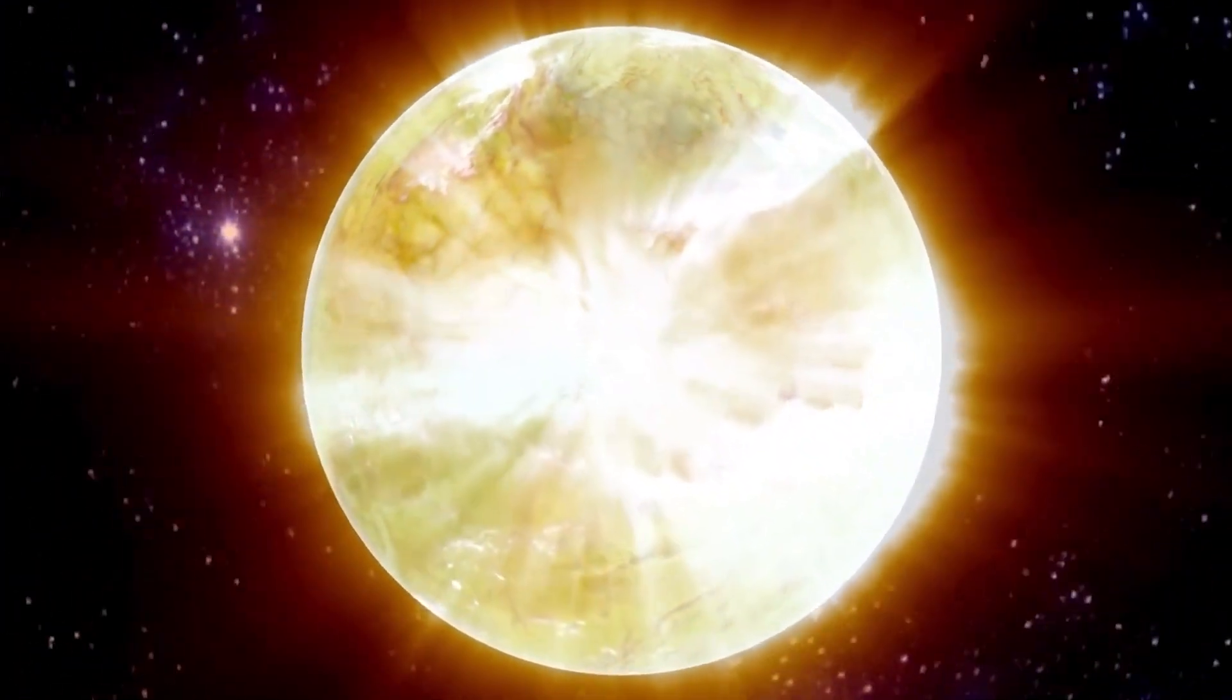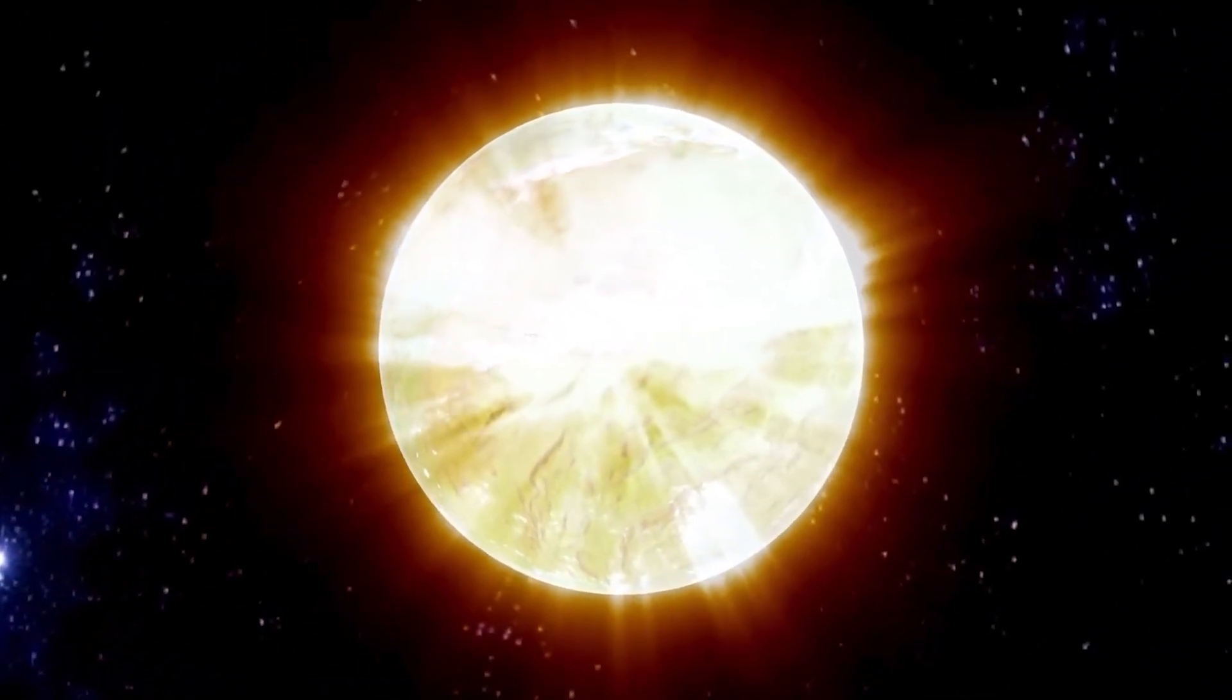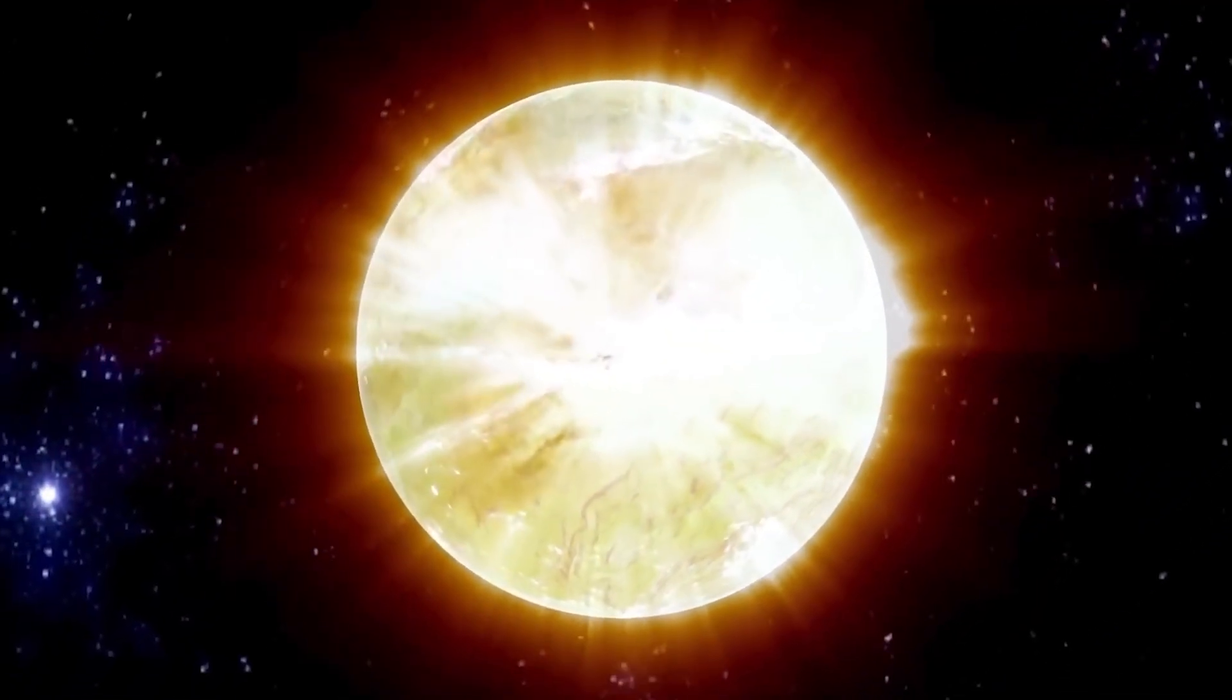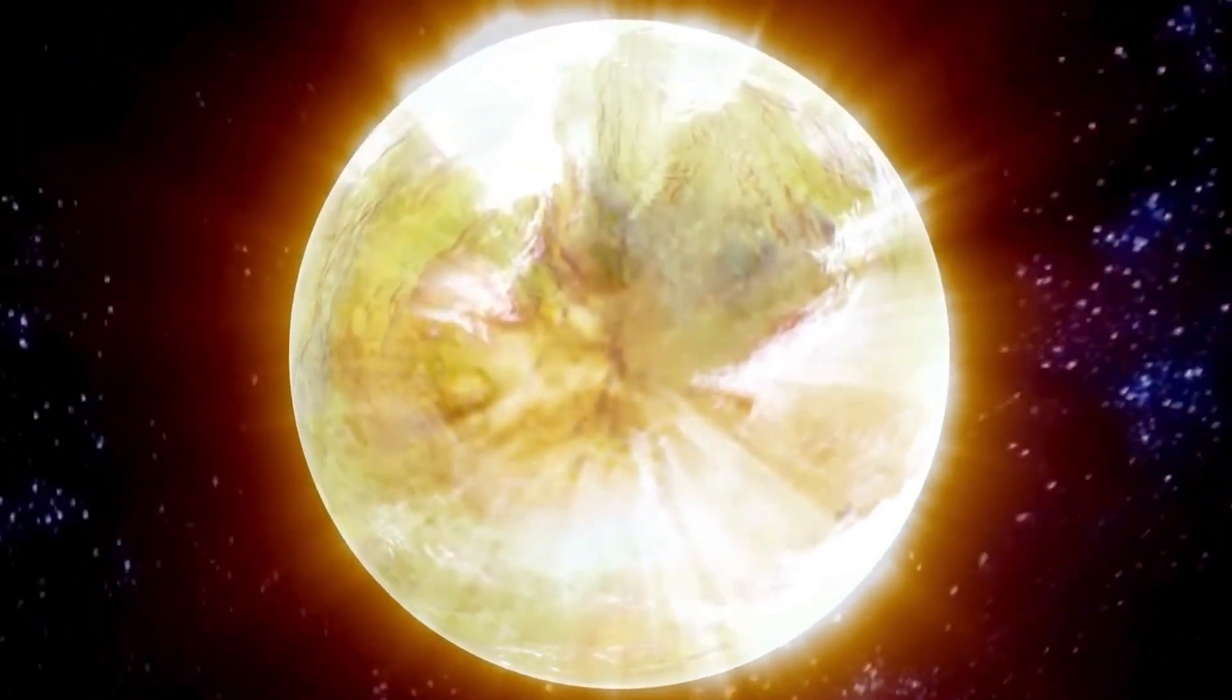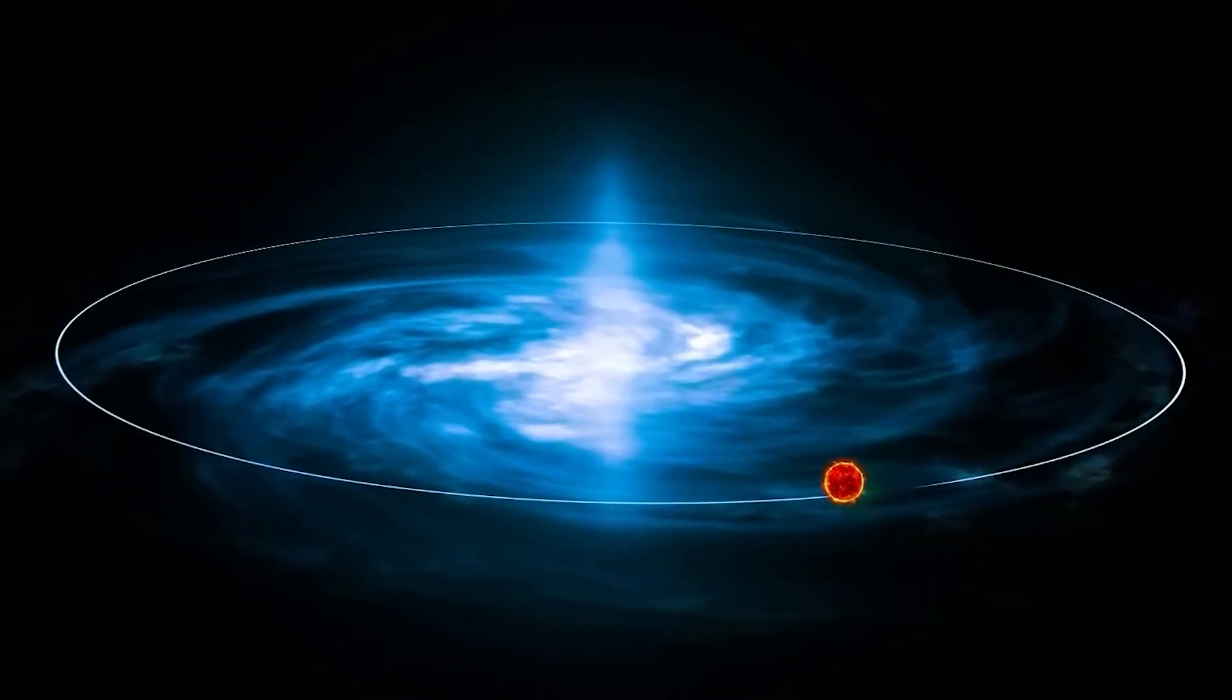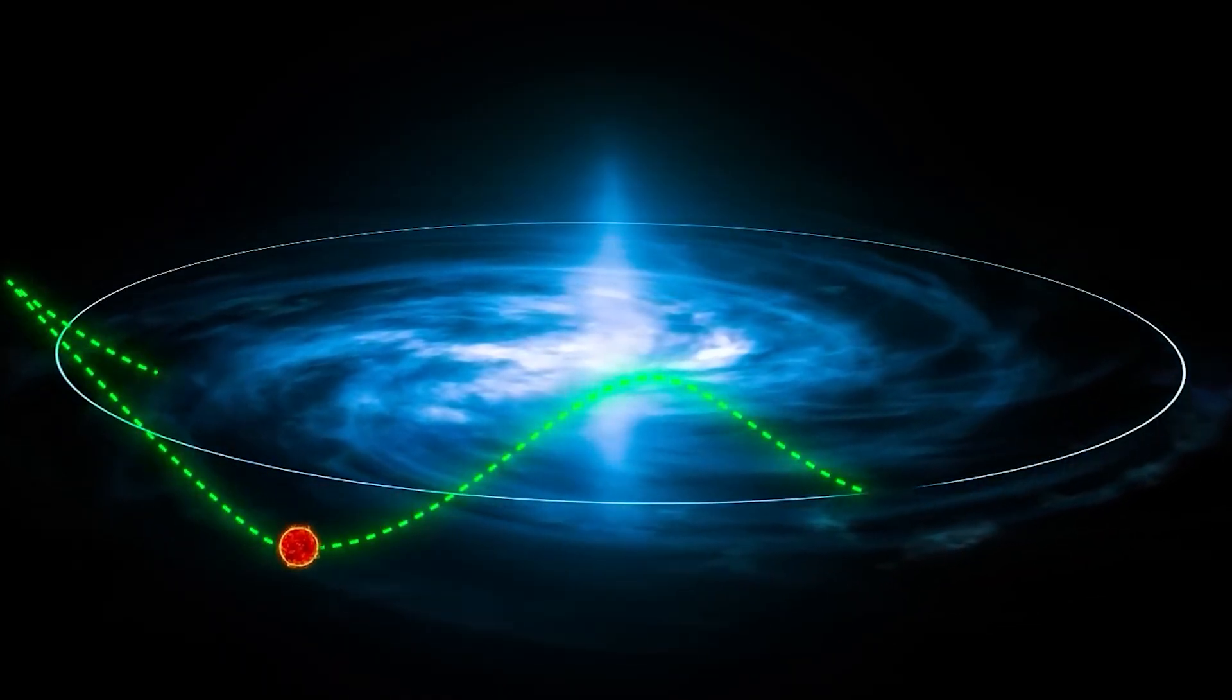This variation, added to the Sun's peculiar motion, creates a very complex trajectory, taking our solar system up and down the galactic plane in continuous movements. To give you an idea, every 60 million years, the Sun completes a vertical oscillation, rising and falling relative to the galactic plane, much like a cosmic roller coaster.